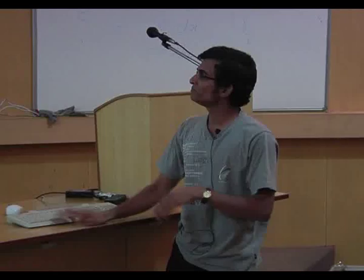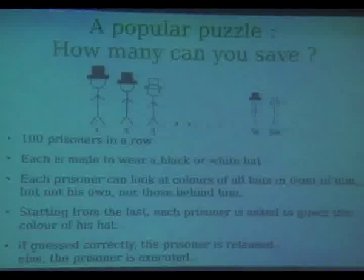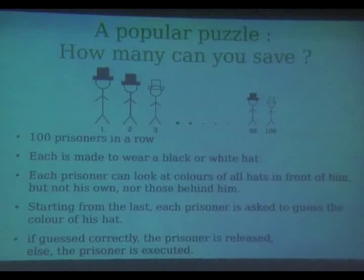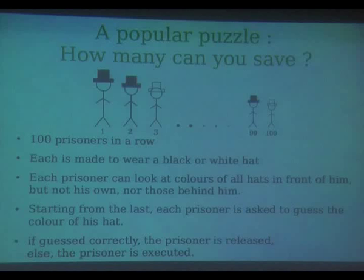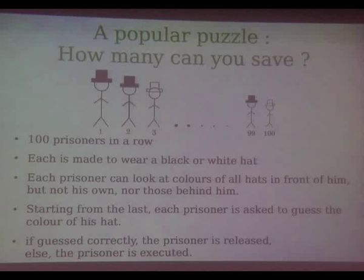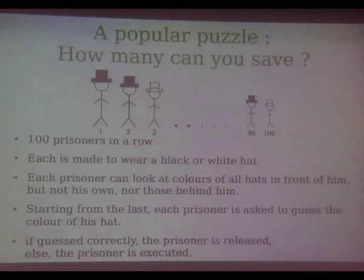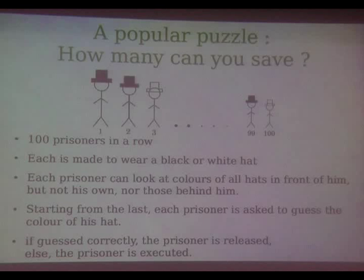Now I will come to this puzzle. There are a hundred prisoners in a row and each is made to wear a black or a white hat. They are all looking towards the right, so each prisoner can see all hats in front of him. But you cannot see your own hat and you cannot see the hats behind you. The game is: starting from the first prisoner, you ask him the color of his hat, he has to shout it aloud so everybody can hear. If the guess is right you release the prisoner, else you execute the prisoner. The question is: the prisoners can decide a strategy to save the maximum number. How many can you save? You can save 99.